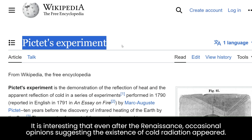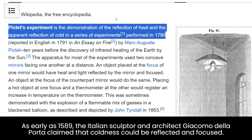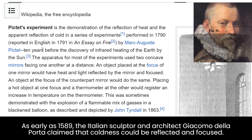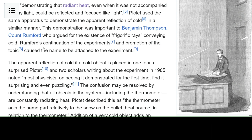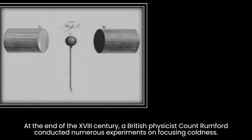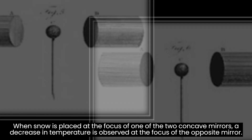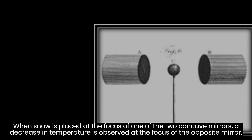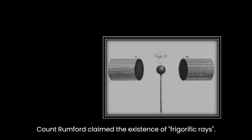It is interesting that even after the Renaissance, occasional opinions suggesting the existence of cold radiation appeared. As early as 1589, the Italian sculptor and architect Giacomo della Porta claimed that coldness could be reflected and focused. At the end of the 18th century, a British physicist Count Rumford conducted numerous experiments on focusing coldness. When snow is placed at the focus of one of the two concave mirrors, a decrease in temperature is observed at the focus of the opposite mirror. Count Rumford claimed the existence of frigorific rays.